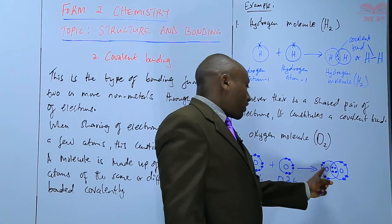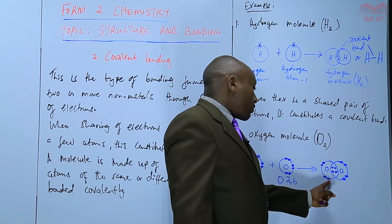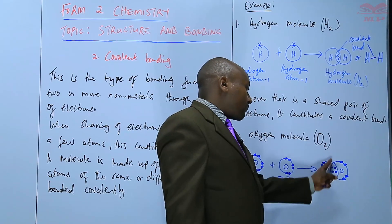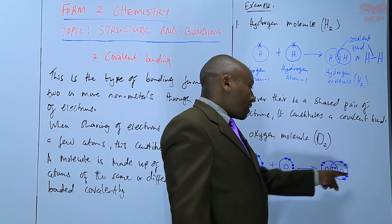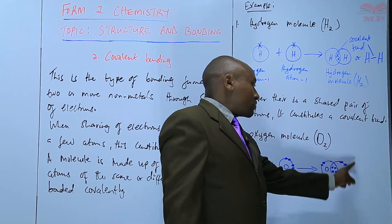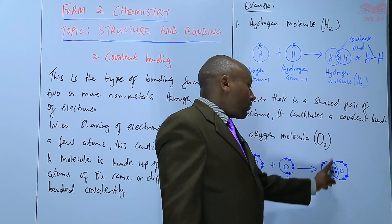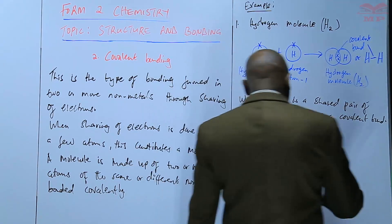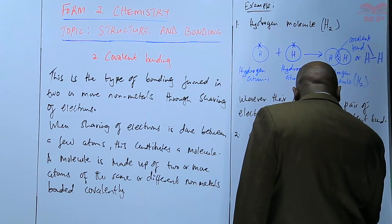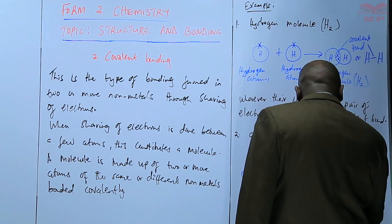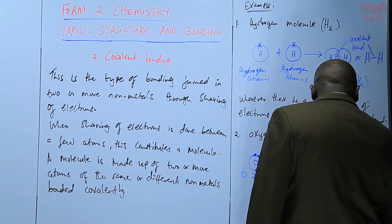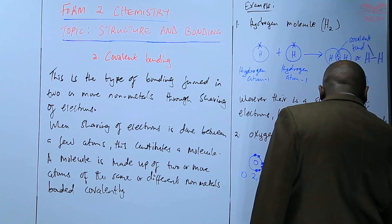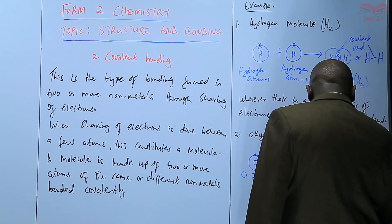If you count the total electrons around each oxygen atom — the shared plus unshared — you get eight. So each oxygen atom effectively has eight electrons, giving it a stable octet. This is now the oxygen molecule, O2.